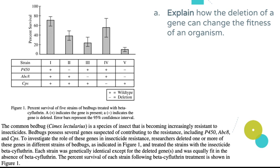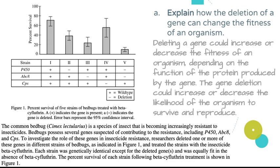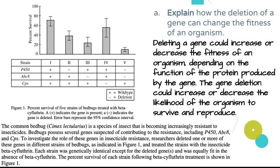For Part A: genes code for proteins, and proteins are responsible for the phenotypes we observe. If I delete a gene, I can increase or decrease the fitness of an organism — it depends on the function of the protein that gene produces. The gene deletion could either increase or decrease the organism's likelihood of surviving and reproducing.